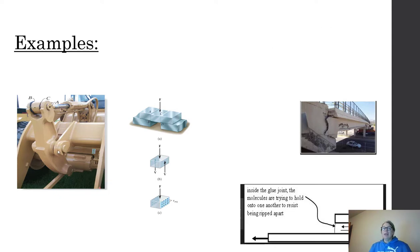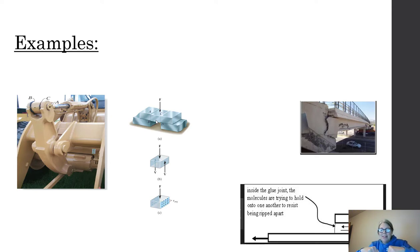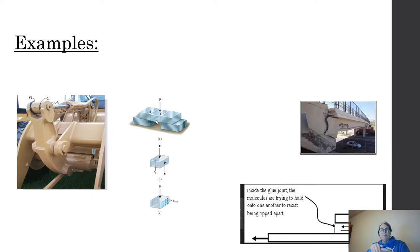Any time we have a cotter pin, bolted connection, or dowels — pulling across — we're going to have a resisting shear force in the cross section of the pin or pins. Also consider punches: when you punch holes in paper for a notebook, that punch going through is a shear force, shearing through the paper. The area being sheared is the circumference times the thickness of the paper.